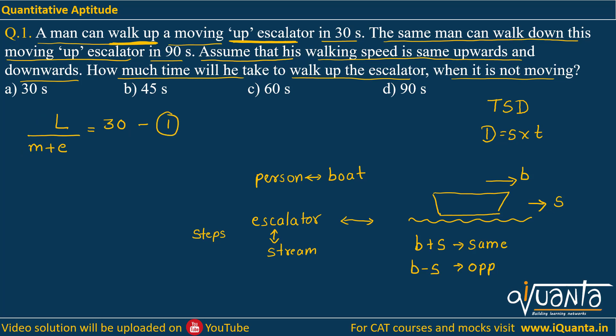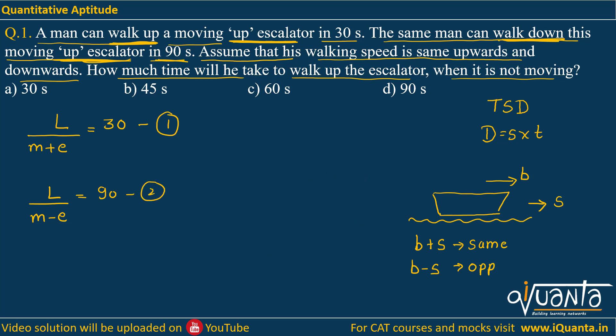In the second case, the man walks down while the escalator moves up — they travel in opposite directions. The net speed is m minus e, covering distance l in 90 seconds. This gives us equation two. We need to find how long he takes to walk up when the escalator is not moving, meaning escalator speed is zero. So we need to find l divided by m.